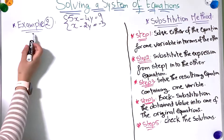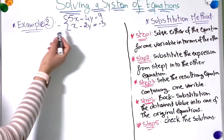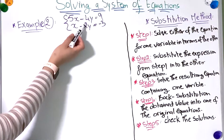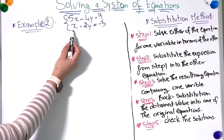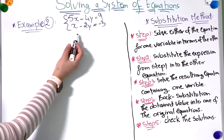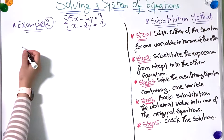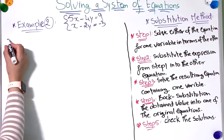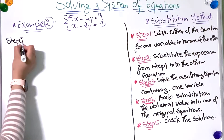Now let's move to the second example. We have the first equation: 5x minus 4y equals 9, and the second: x minus 2y equals minus 3. I'd like you to stop the video and try it yourself, then come back to check your answer. When you come back, the first step is to find one variable in terms of the other.